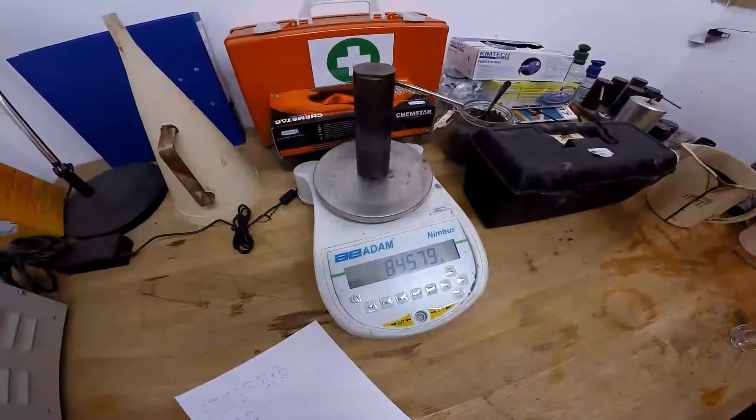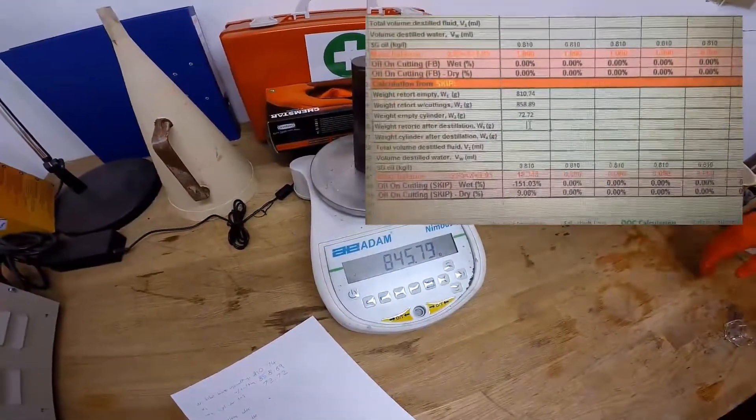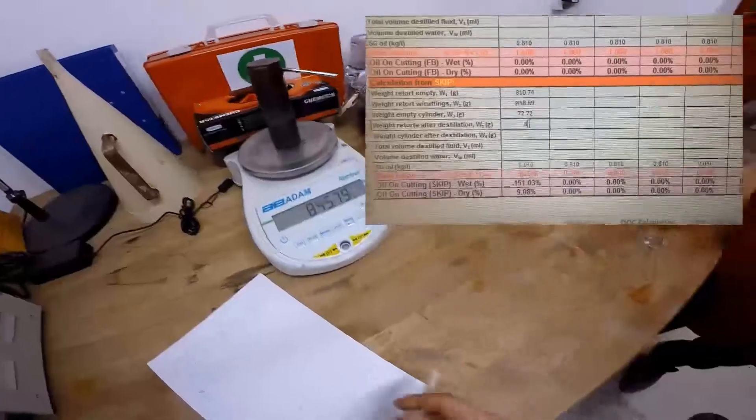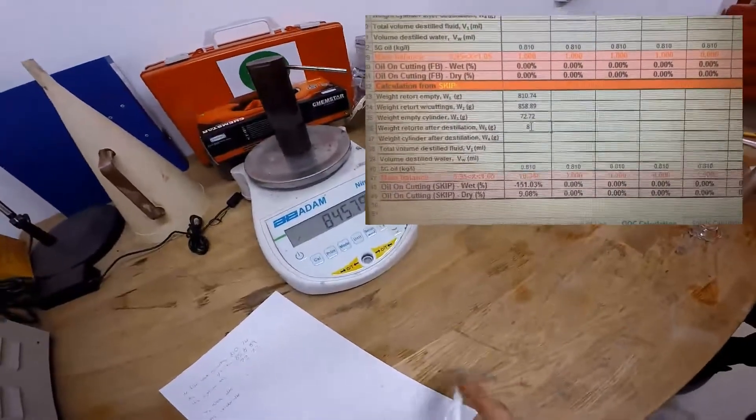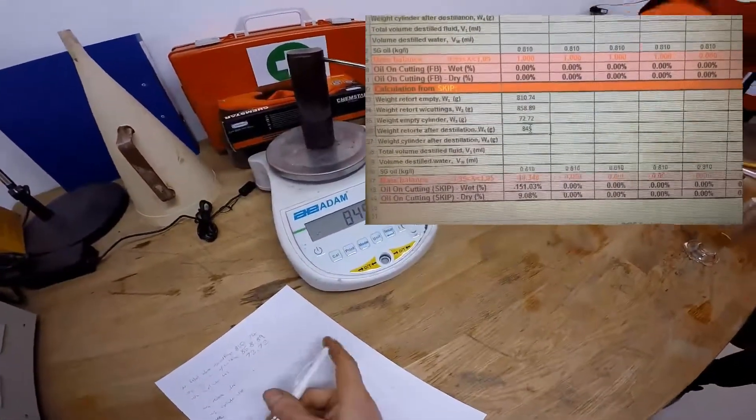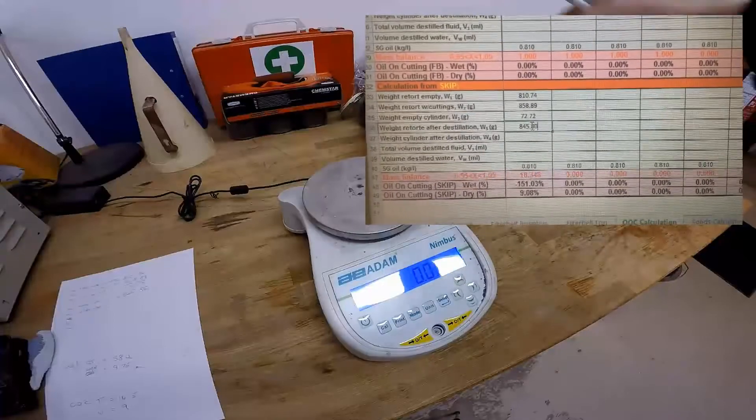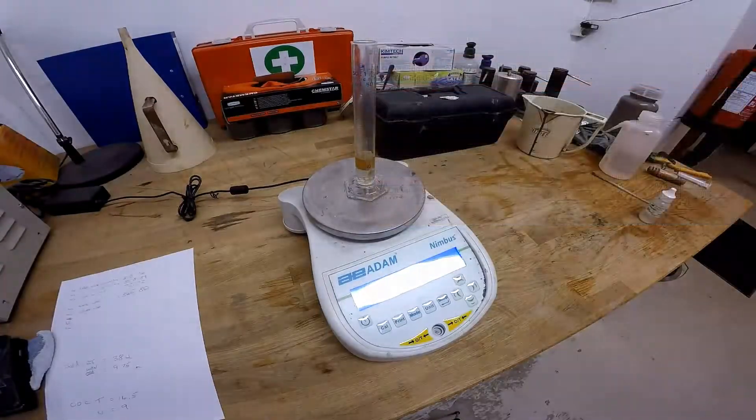So we need the retort weight after burning so we can put that into the computer, and also one of the cylinder after burning.